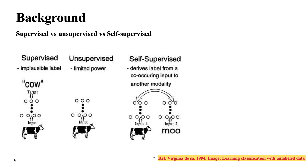There are three main kinds of learning methods: supervised, unsupervised, and self-supervised. In supervised learning, you have images with labels and a neural network predicts the label. In unsupervised learning, the power is limited — you cluster images from your data. In self-supervised learning, labels are derived from co-occurring inputs to another modality — the power is within the image itself, where we extract important information and use those extracted representations to predict something or perform tasks.